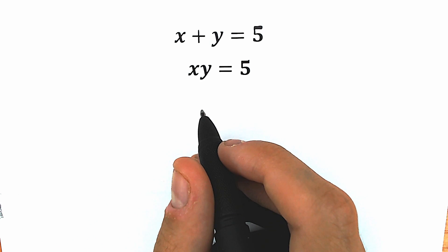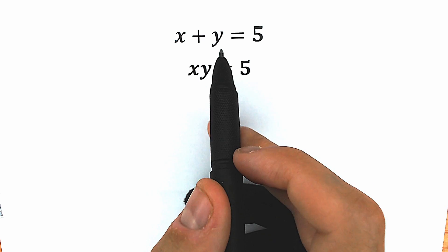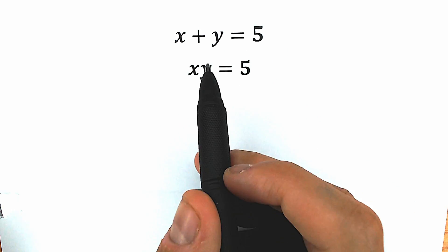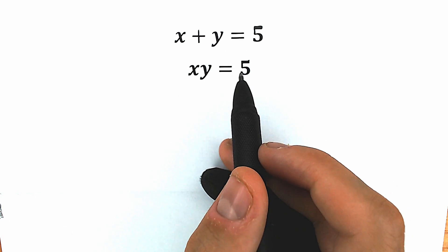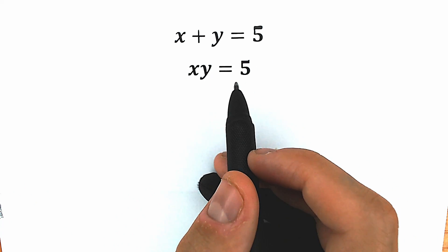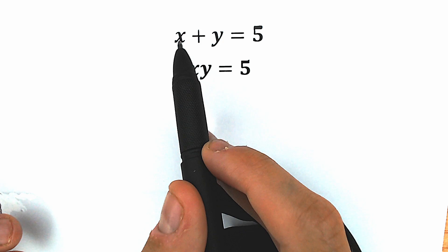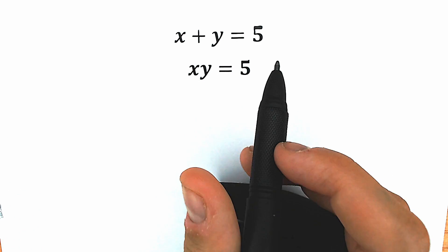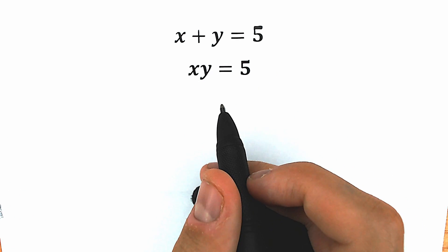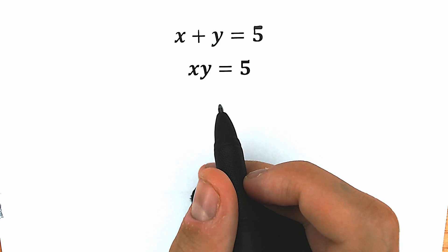Today we have a really interesting, relaxing and easy school challenge: x plus y equals 5, and xy equals 5. A lot of students are confused how that happens — the sum equal to 5 and the product equal to 5 — but everything is possible in math.